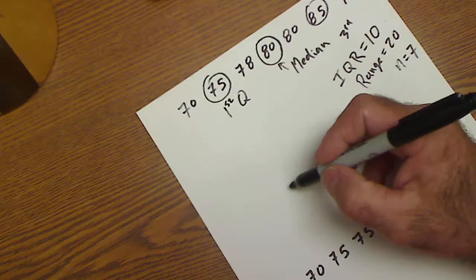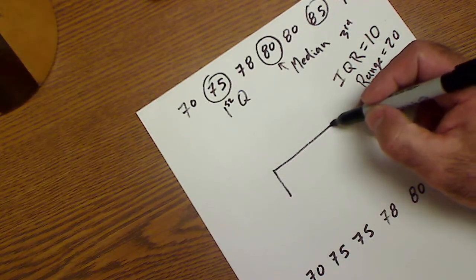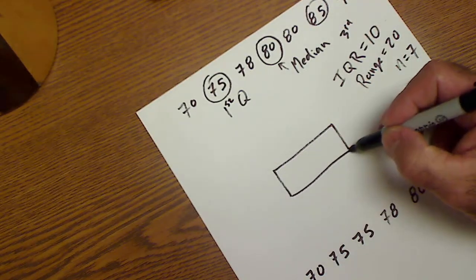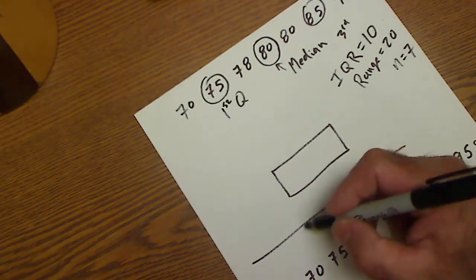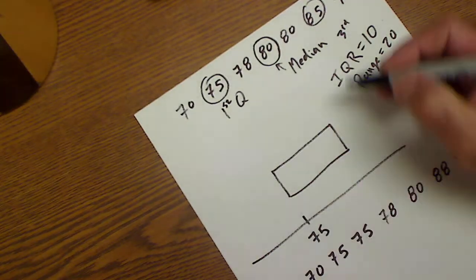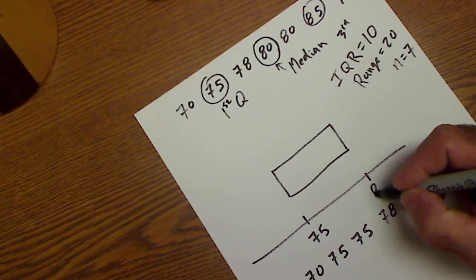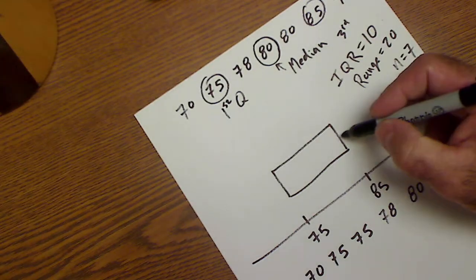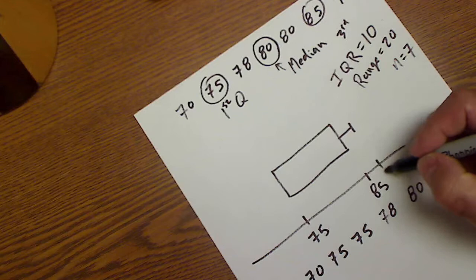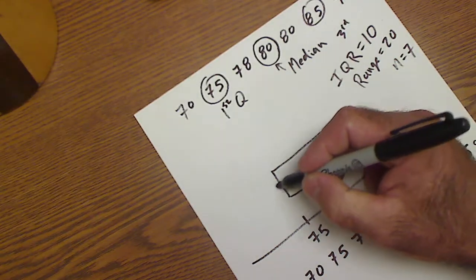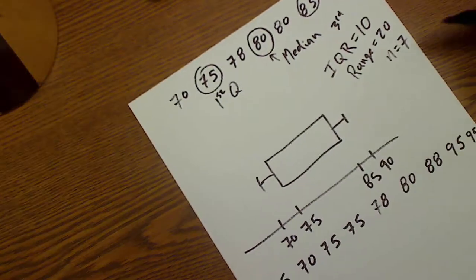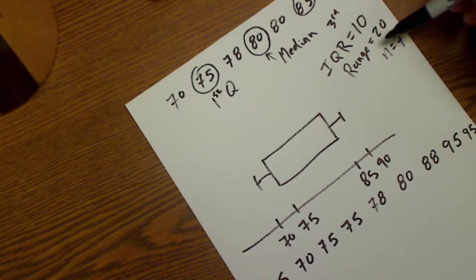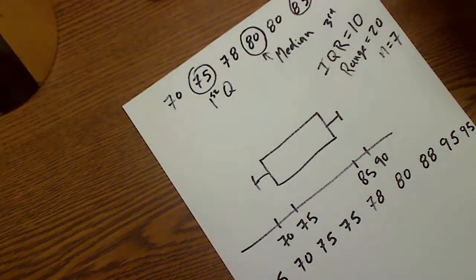And to draw a box plot, the box is going to be the size of your first quartile 75 to your third quartile 85 and then your last quartile is going to go over to 90 and your first quartile goes down to 70. So that's how you draw a box plot. Find the interquartile range, the range, the median.